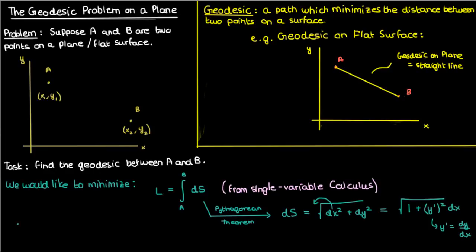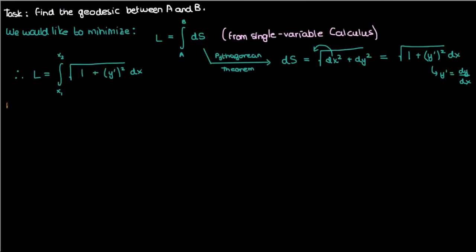Which means that the distance L is just the integral from x1 to x2 of the square root of 1 plus y prime squared. Now remember y prime here is used to denote dy by dx.